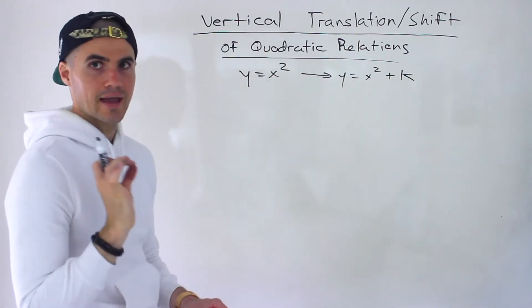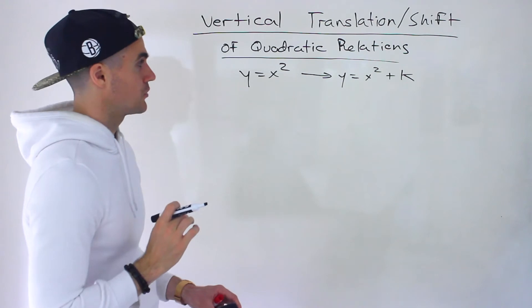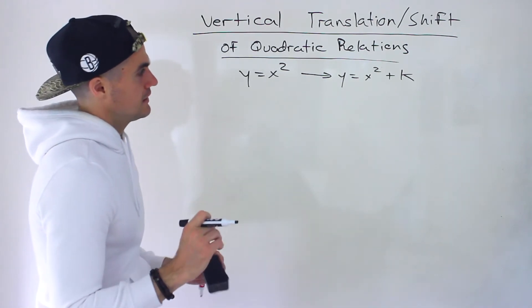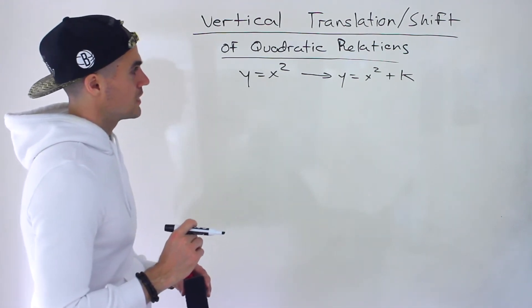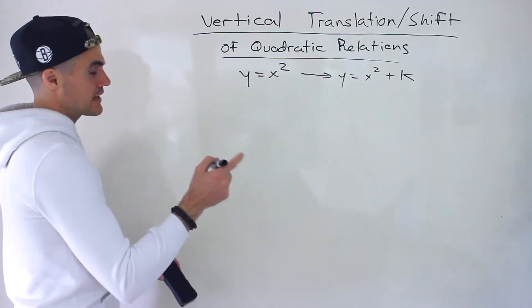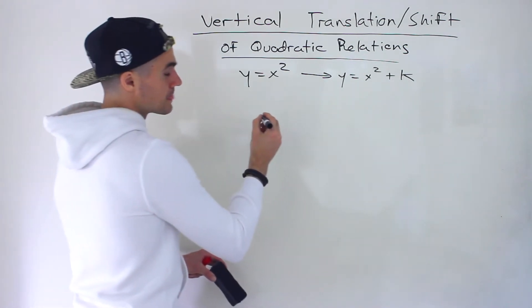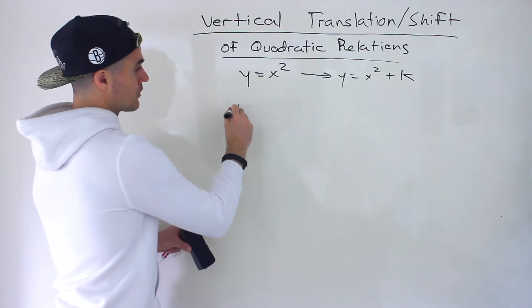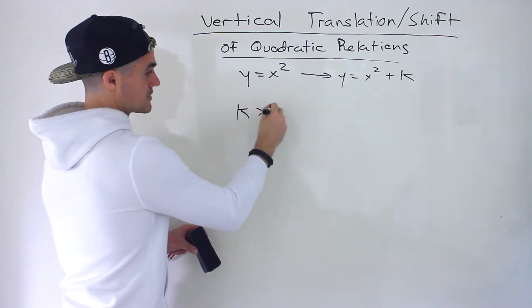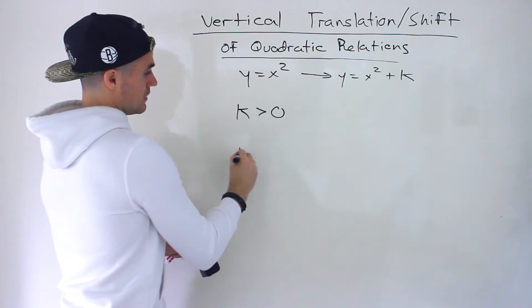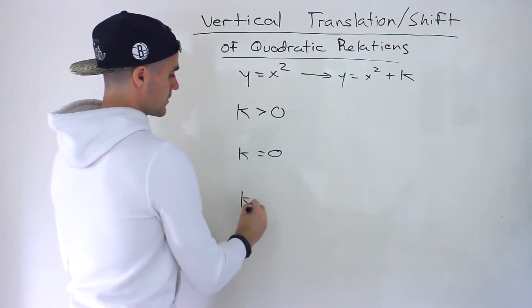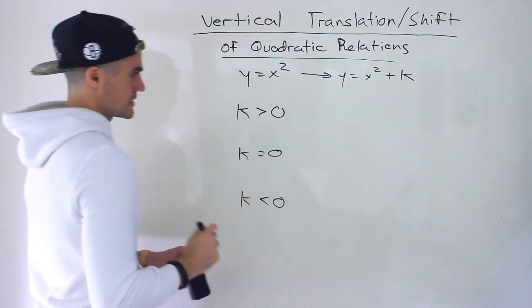We're just looking at that k value separately. The k value, in my opinion, is the easiest to work with. Like the h value, there's only three cases: either k is positive (k > 0), k equals zero, or k is negative (k < 0).